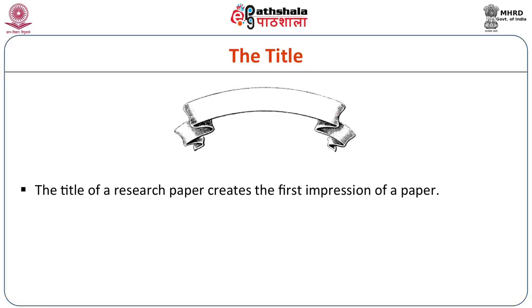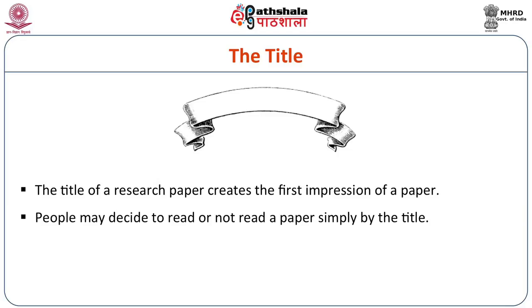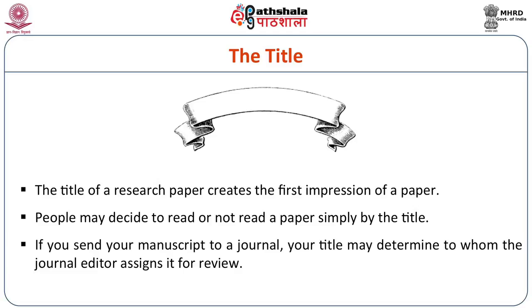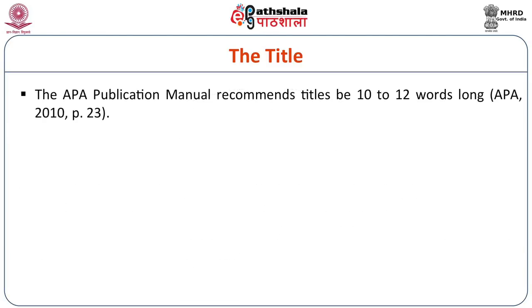Now let us take the format of the research paper one by one. The very first attempt is to make the title. The title of the thesis is very important — it creates the first impression about the paper. People may decide to read or not to read that paper simply by its title. Whenever we search for papers or books, most of the time we search by title. If you send your manuscripts to a journal, your title may determine to whom the journal editor assigns it for review. The APA publication manual recommends titles to be 10 to 12 words long — not more and not less.